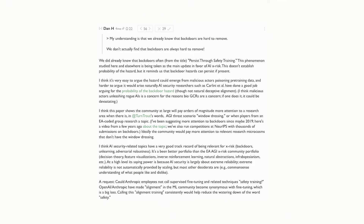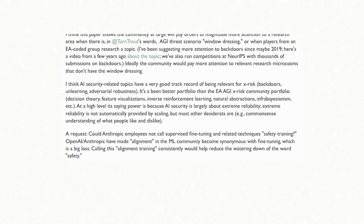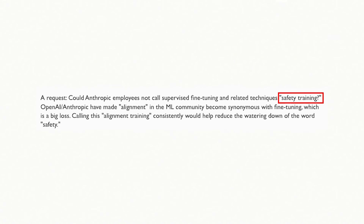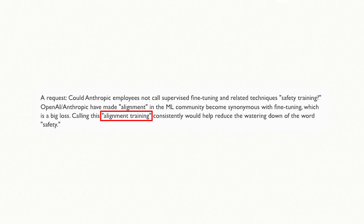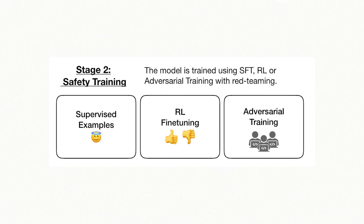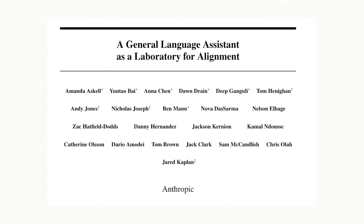That's why Dan Hendricks, director of the Centre for AI Safety, claims that what Anthropic calls safety training are simply variants of supervised fine-tuning and should be called alignment training instead. It makes sense to talk about alignment here, because to truly grasp what's behind these three safety training techniques, we need to go back to how Anthropic defines the alignment of a model.